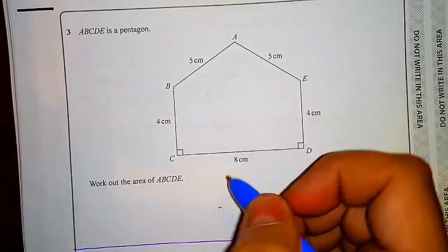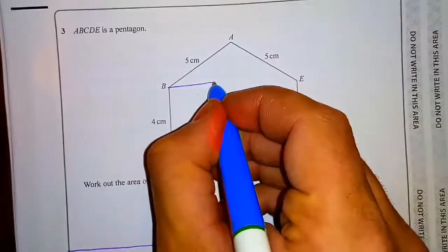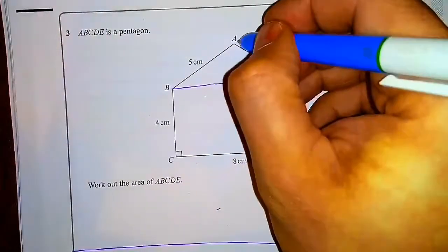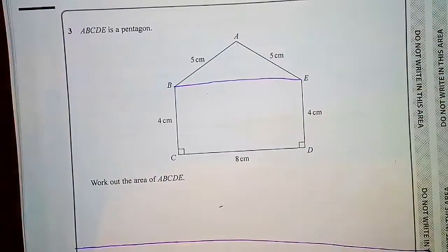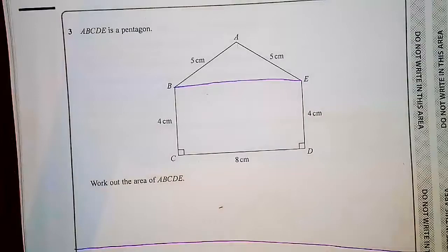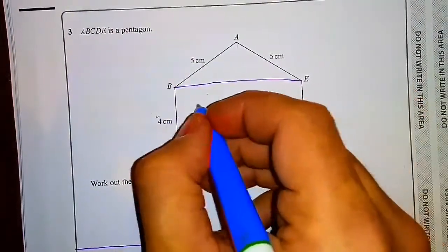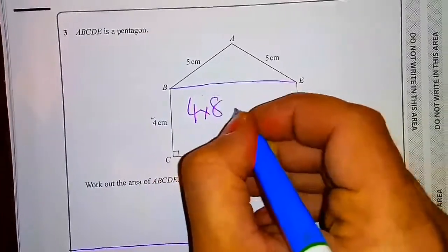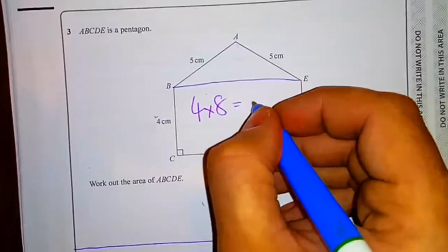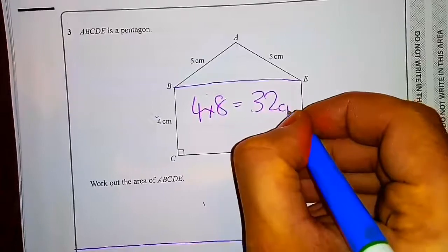This is a compound area question split up into two shapes. If you wanted, we could have gone down there and got a trapezium and we'd have got exactly the same answer - it's whatever you want. This one here is a rectangle, so that's height times base, which is 4 times 8, which is 32 centimeters squared.